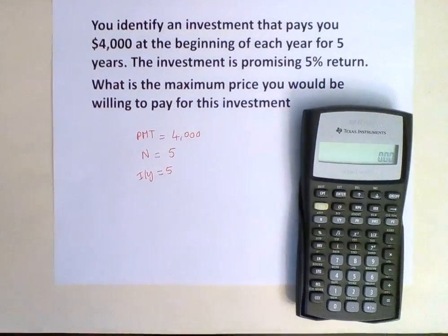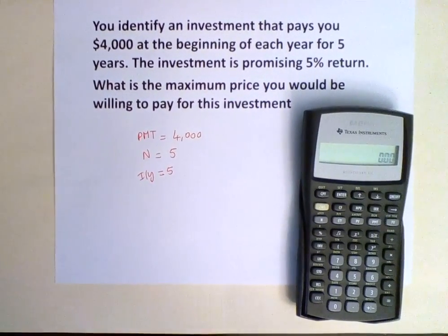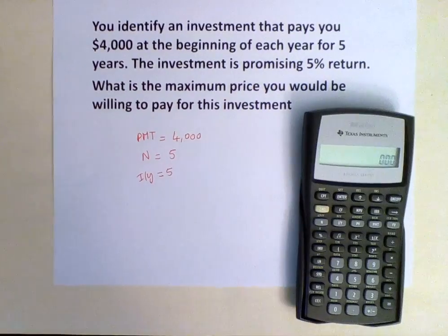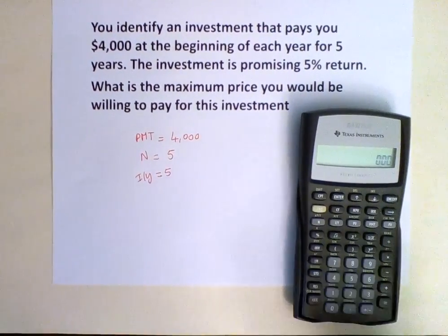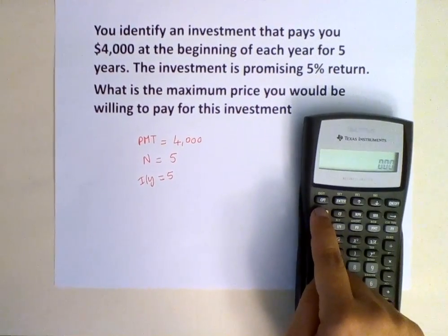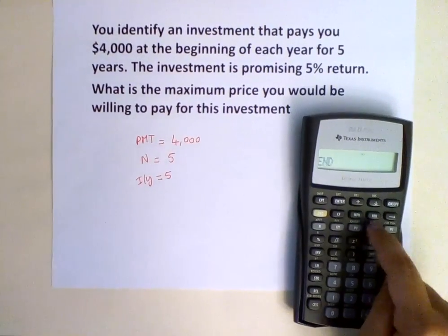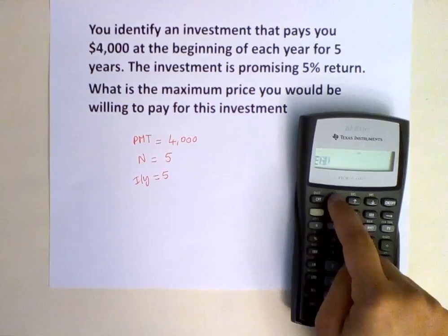Now we need to set the calculator to begin mode so that we can calculate this annuity due. To do that, we hit second, PMT, second, enter.